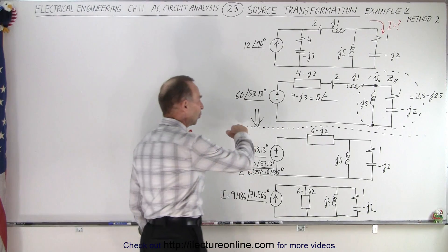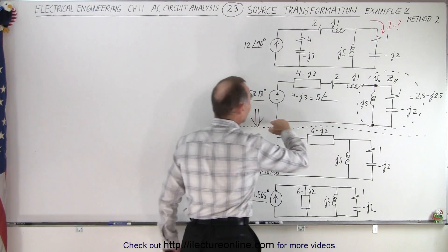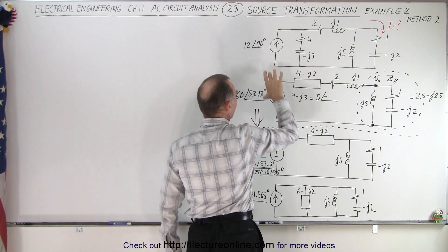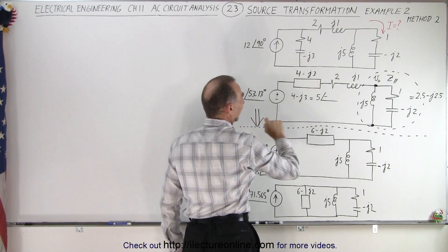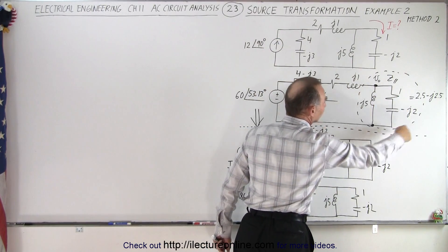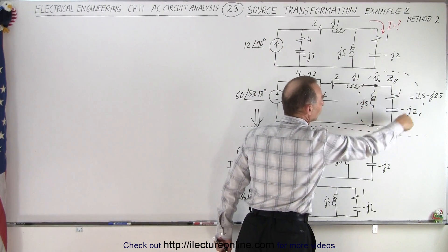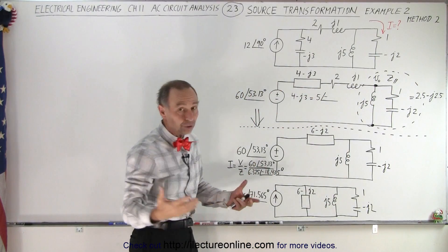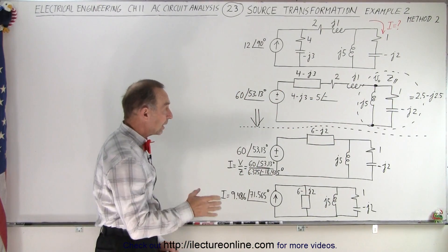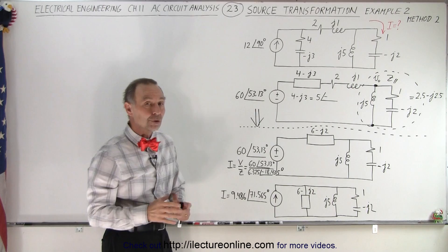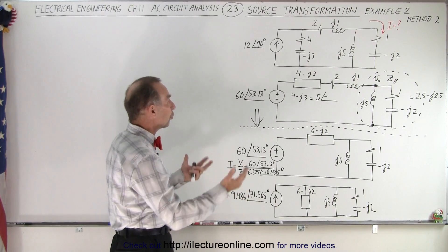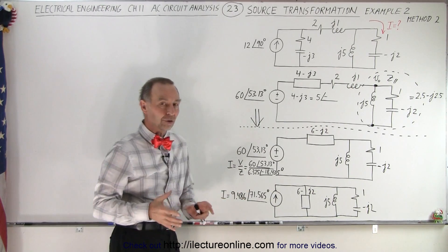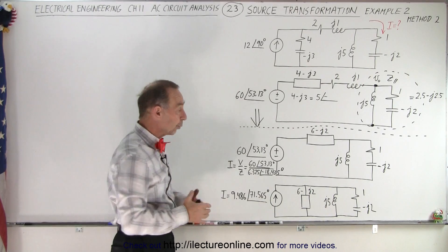This is where we stopped on the previous video. What we did was we transformed from a current source to a voltage source, and then we ended up solving for the impedance of the parallel branch right here, and then simply using a voltage divider. But here what we're going to do is we're going to continue using source transformation back and forth to simplify the circuit to something we can work with.